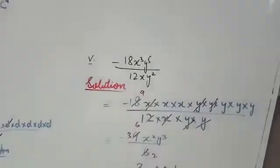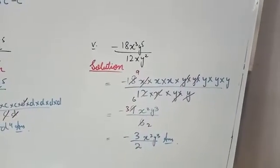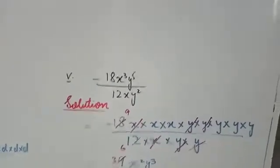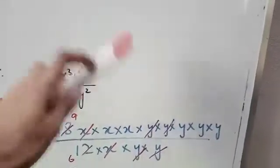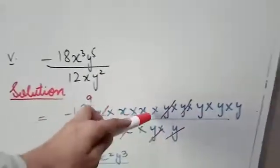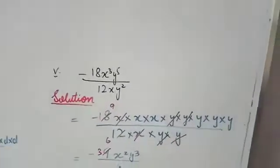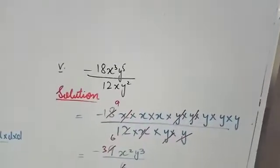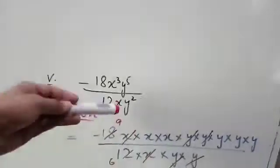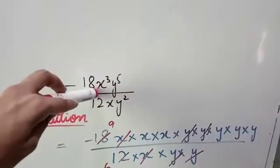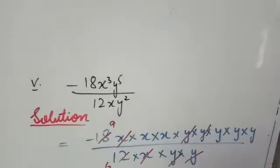Then comes the fifth part: minus 18x³y⁵ divided by 12xy². In the numerator you have x³ and y⁵; in the denominator x and y². You can expand and cancel, or cancel directly. x cancels one time — leaving x² in the numerator. y cancels two times — leaving y³ in the numerator.